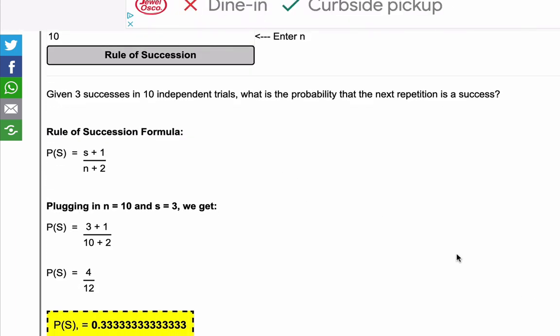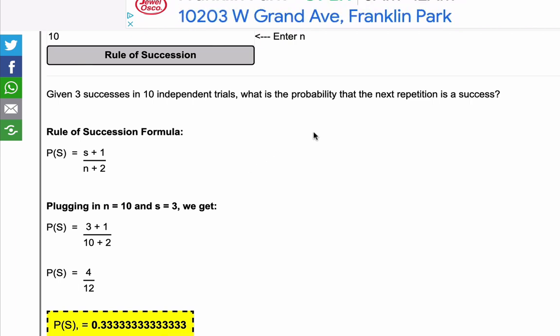So given three successes in 10 independent trials, what is the probability that the next repetition is a success?